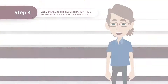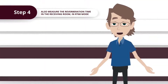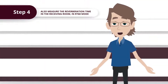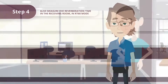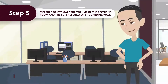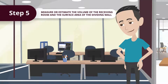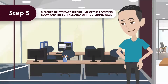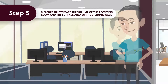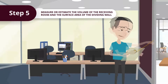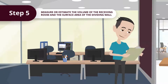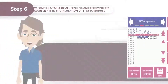Step 4: Also measure the reverberation time in the receiving room in RT60 mode. This is needed for corrections applied during the calculation of insulation values. Step 5: Measure or estimate the volume of the receiving room and the surface area of the dividing wall. These are also needed for corrections.